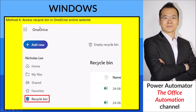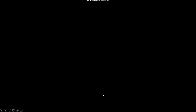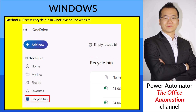The last method is for deleted files. Go to OneDrive and find the Recycle Bin. Locate your file there and you can restore it from the Recycle Bin.